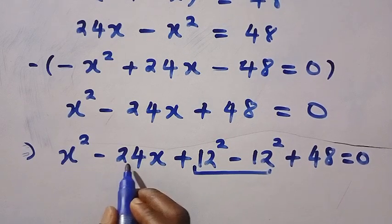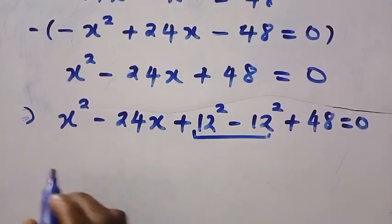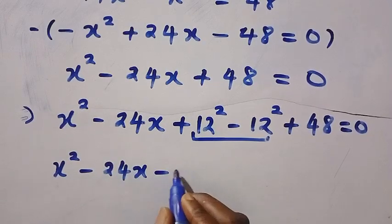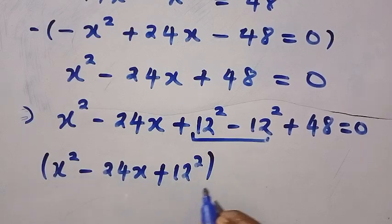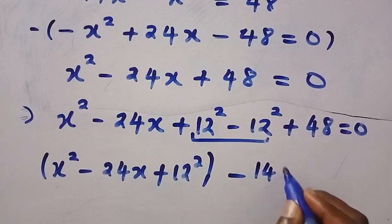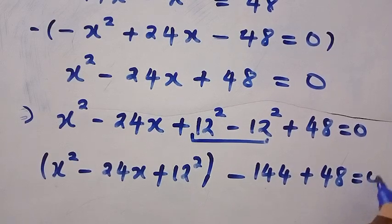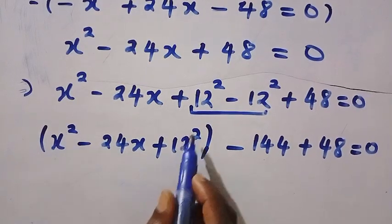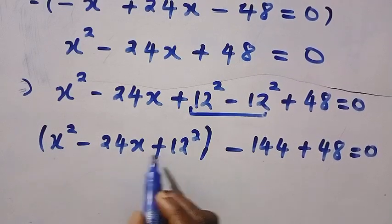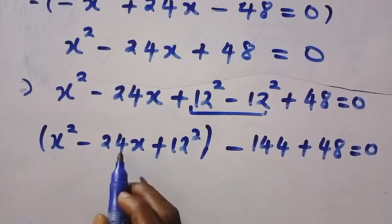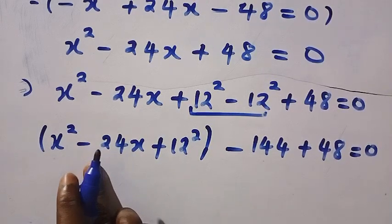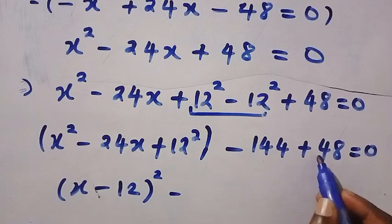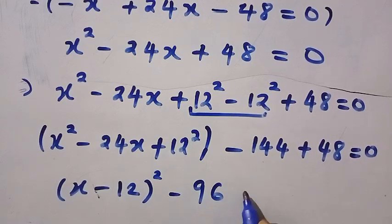Let's group X squared minus 24X plus 12 squared together. By grouping that, we have (X squared minus 24X plus 12 squared) minus 12 squared, which is 144, plus 48 equals 0. We rewrite the bracket as a perfect square: (X minus 12) raised to the power 2, minus 144 plus 48. We get (X minus 12) squared minus 96 equals 0.